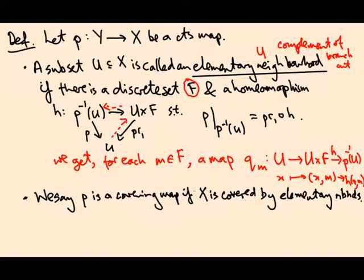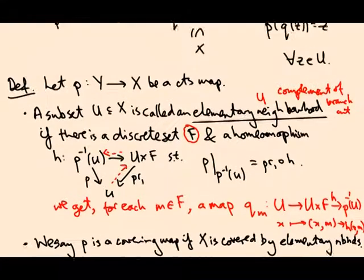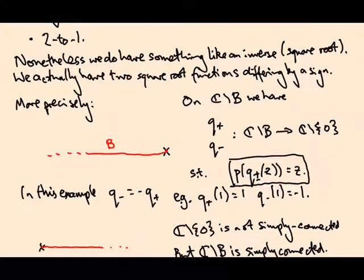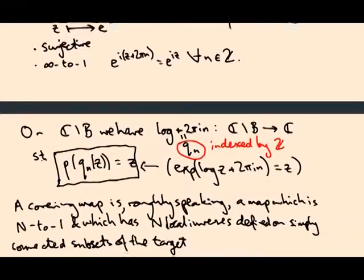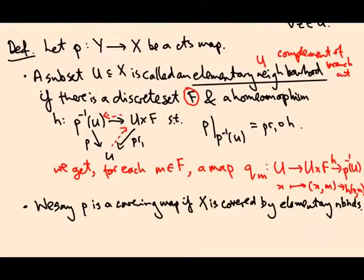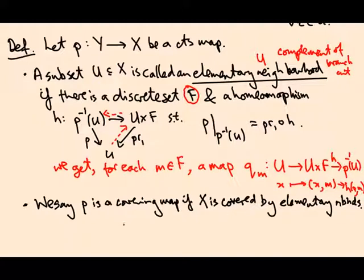I'm just going to write ENBHDs for neighborhoods. So in other words, this is saying every point in X is contained in the complement of some branch cut for which you have these locally defined inverses. That's exactly what I said up here - for the square root you can either take the branch cut going in the negative x direction or the positive x direction or in any direction. The same is true in the exponential case.